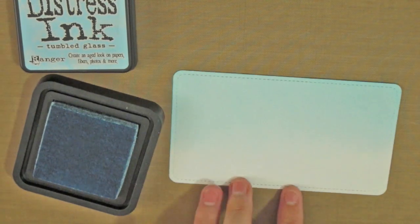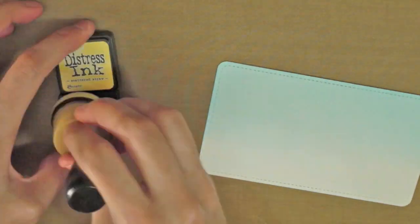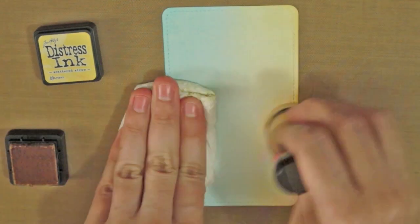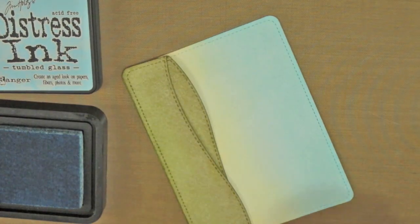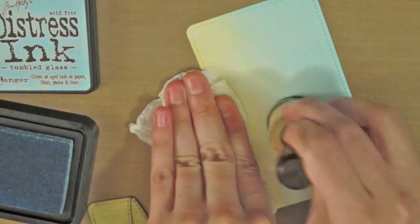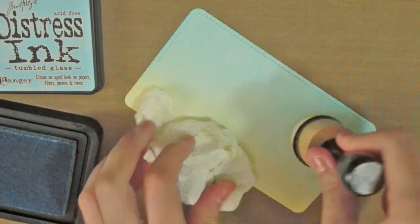For the rectangle, I will start adding my tumbled glass distress ink to the top. Then I will add some scattered straw to the bottom. This will look like a sunset behind the hills. I have to keep in mind that the hills will go lower than the rectangle.